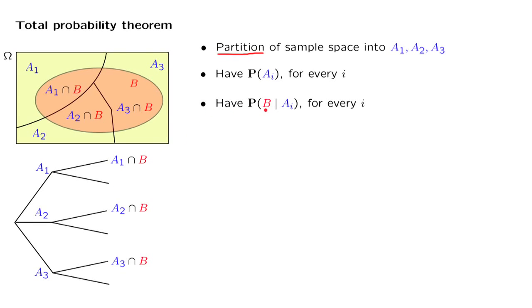Finally, we are given conditional probabilities that event B will materialize under each one of the different possible scenarios. Under those circumstances, can we calculate the probability of event B? Of course we can, and here's how we do it.